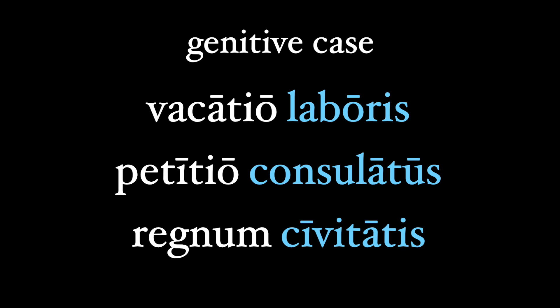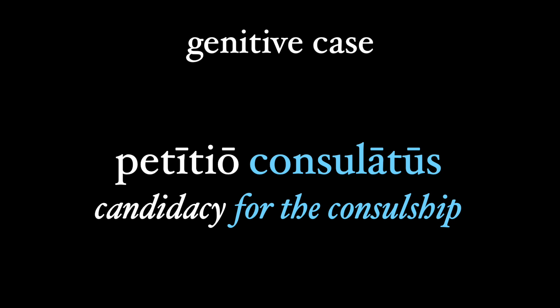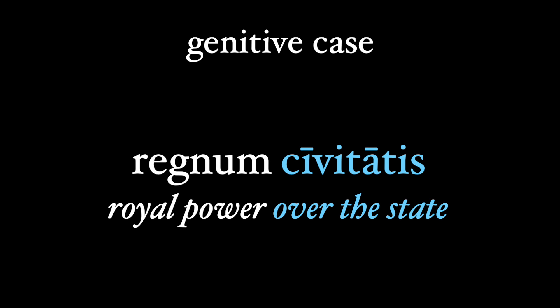But look at these examples, where the noun in the genitive case is again going to limit or define another noun. Vacatio labores — a break from work. What kind of a break is it? It's a break from work. The labores defines the vacatio. Petitio consulatus — candidacy for the consulship. The consulatus, a fourth declension genitive singular, helps limit or define the petitio. And one more: regnum civitatis — royal power over the state. The civitatis defines the regnum.